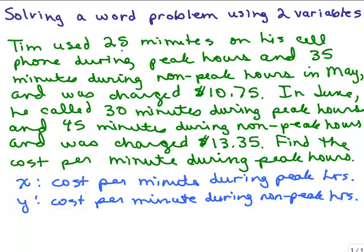The first sentence tells us that Tim used 25 minutes during peak. If the cost for peak was X and he used 25 minutes, then the total for the peak would be 25 times X. So 25X is how much he would have to pay for those peak minutes. But he also has to pay for the time he used in non-peak. He used 35 minutes during the non-peak hours.